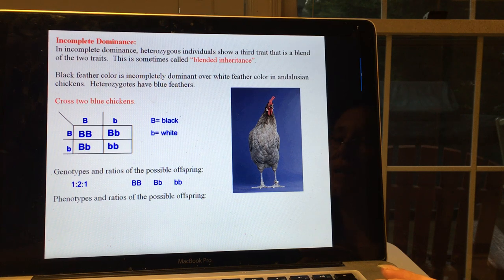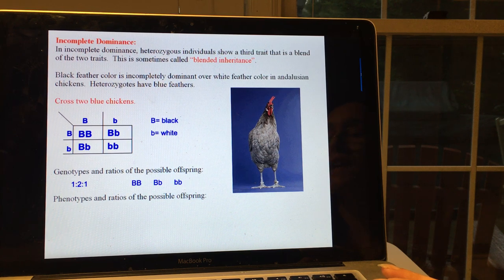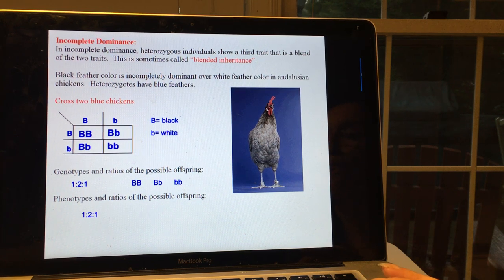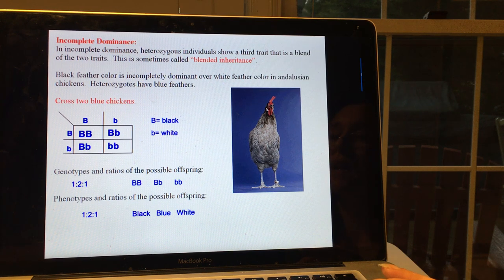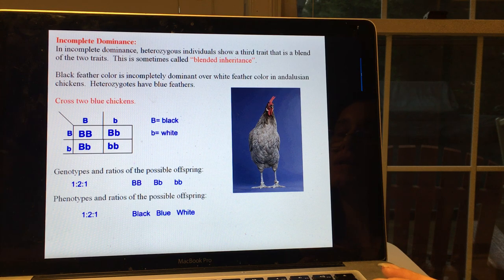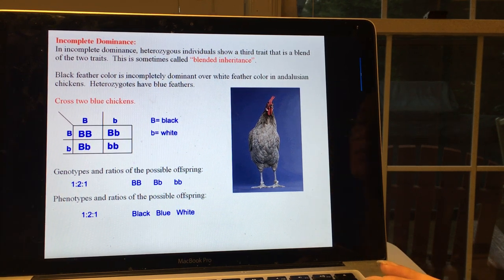But what's different now is the phenotypic ratio. You no longer have the 3 to 1 phenotypic ratio that you do if one allele is dominant over the other. You have a 1 to 2 to 1 ratio of black to blue to white. And again, remember that blue is not bright blue by any means, and we've included a picture to show you the grayish in-between color.